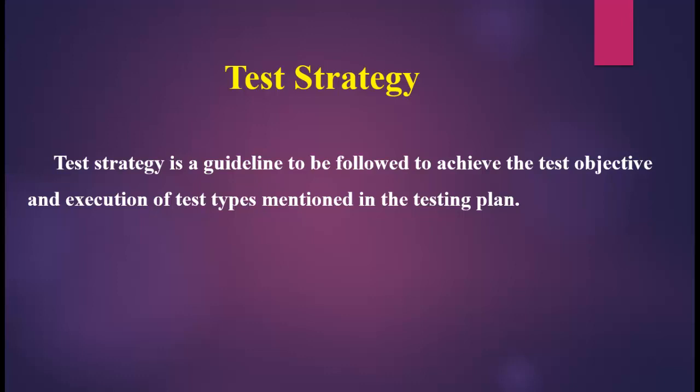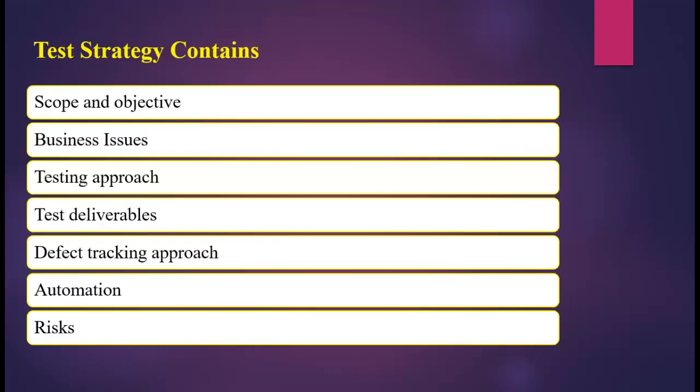Test strategy is a guideline to be followed to achieve the test objective and execution of test types mentioned in the testing plan. It deals with test objective, test environment, test approach, automation tools and strategy, and contingency plan and risk analysis. It also defines the strategic plan for how the test effort will be conducted against one or more aspects of the target system.